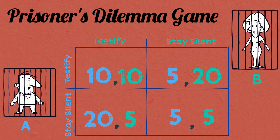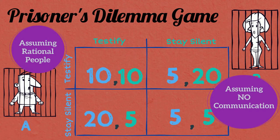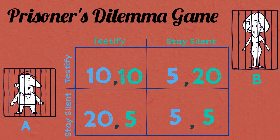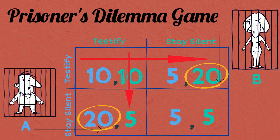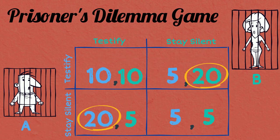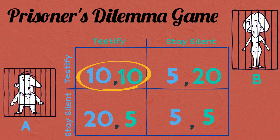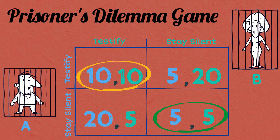In this case, if we assume that both are rational individuals and there is no means of communication between them, it is in the best interest for both of them to testify against each other. Because if one was silent and the other testifies, it would put them in jail for a very long time. Since they cannot trust their partner to stay silent, they each choose to testify. The dilemma is that both prisoners choose an option that makes everyone worse off — with 10 years in jail — when there was an option available where they could have been better off with only 5 years in jail.